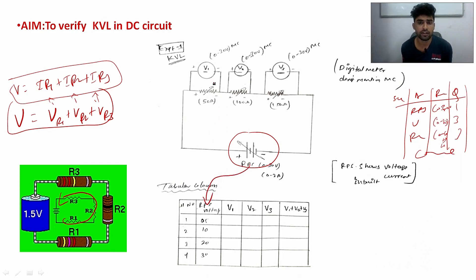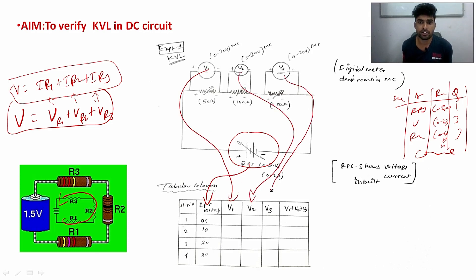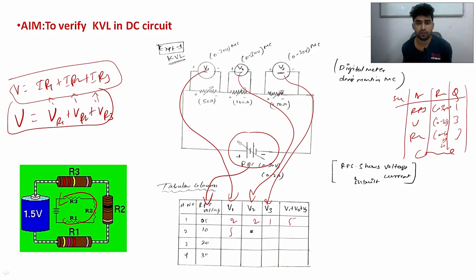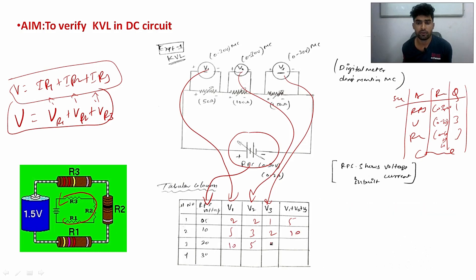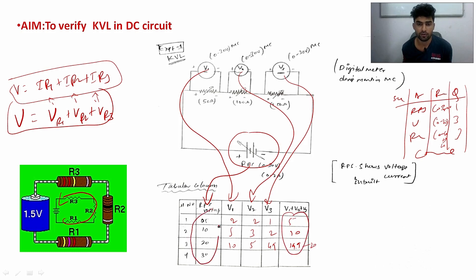Based on the circuit diagram we will make an observation table with columns: RPS reading, voltmeter V1, voltmeter V2, and voltmeter V3. For example, if RPS voltage is 5V, you get 2 + 2 + 1 = 5. If 10V, then 5 + 3 + 2 = 10. If 20V, then 10 + 5 + 4.9 ≈ 19.9, which verifies that supply voltage equals the sum of voltmeter readings — KVL is verified.